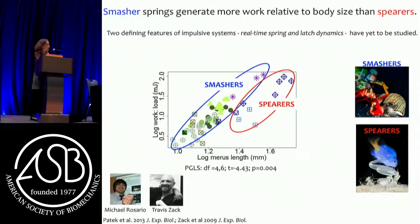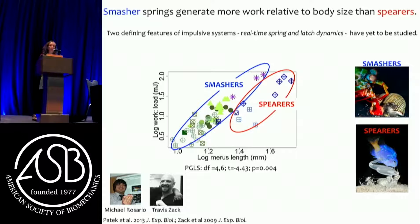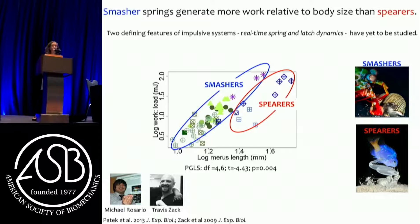This graph shows appendage size on the x-axis and the work that goes into a spring on the y-axis. Testing springs on a materials testing machine, we found that for a given body size, smashers generate more work in their spring than spearers - which makes sense given the orders-of-magnitude greater acceleration. But we do not understand the real-time spring dynamics of these systems, and we also do not know what the latch dynamics are. We have a motion driven by a spring that has never been tested at the right timescale - that's generally true, and we're working on that in the lab.